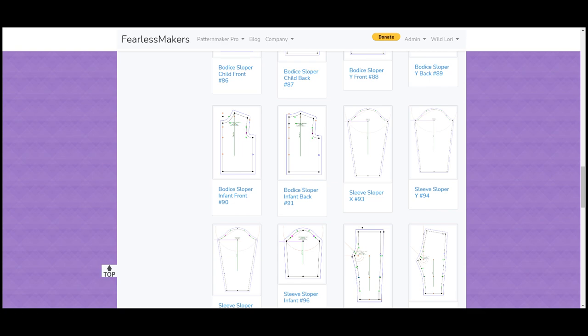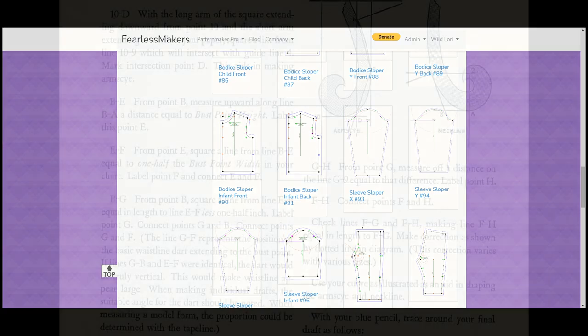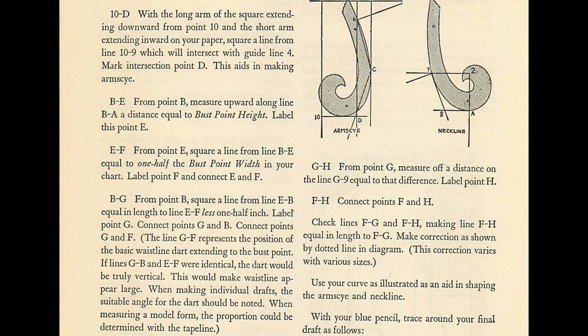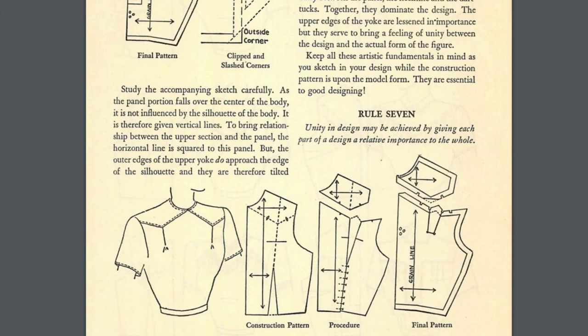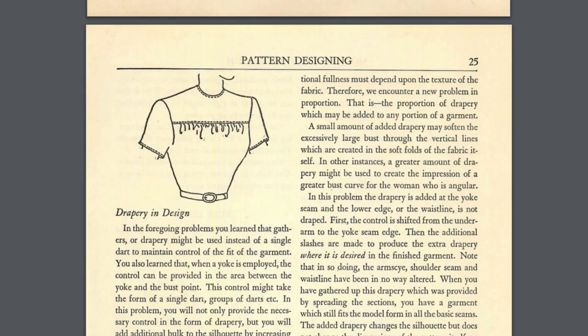I want to illustrate the power of this tool. You're not limited to the slopers I've provided — you can create your own using any drafting book you can find. All of these books use the pencil and paper method, and I'll show you how easy it is to convert those instructions to the Fashioner. The instructions we're going to use come from a 1942 book by Harriet Pepin titled 'Modern Pattern Design: The Complete Guide to the Creation of Patterns as a Means of Designing Smart Wearing Apparel.' Quite the title — I love this book and it's chock full of amazing design ideas.